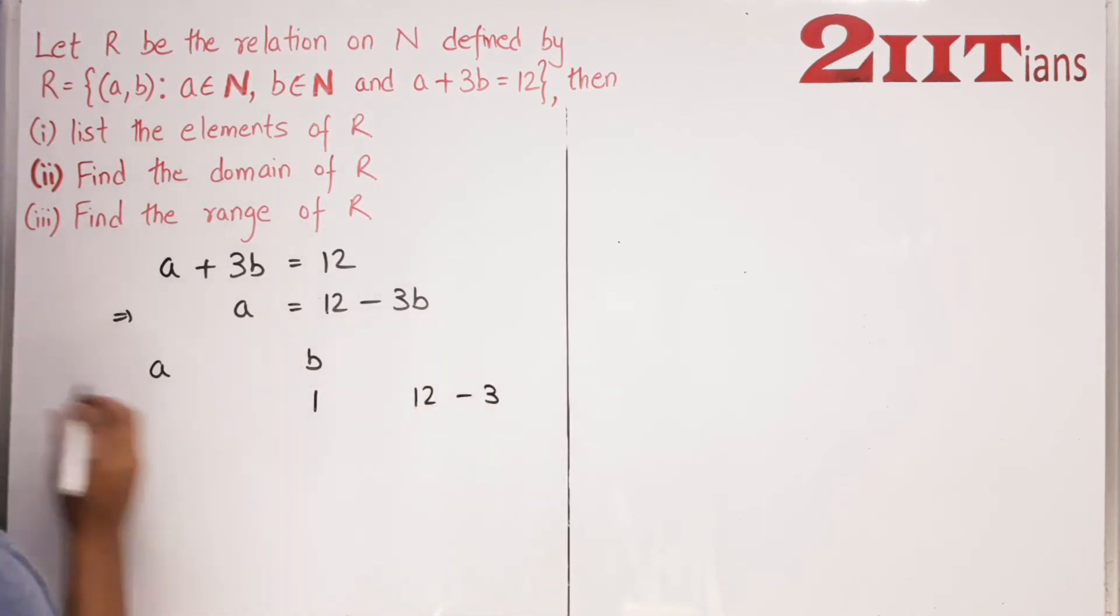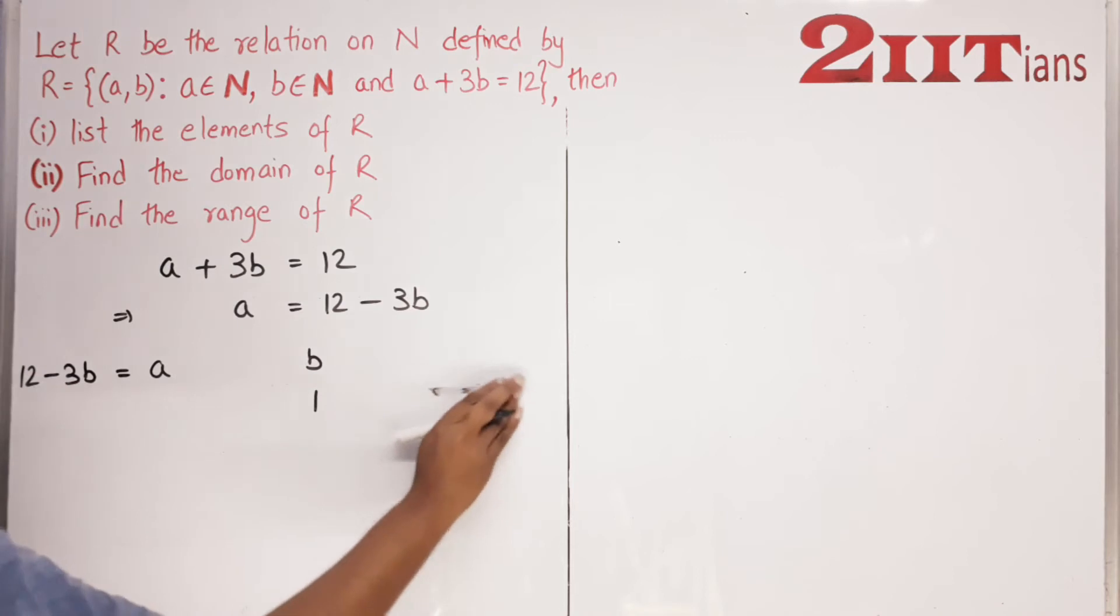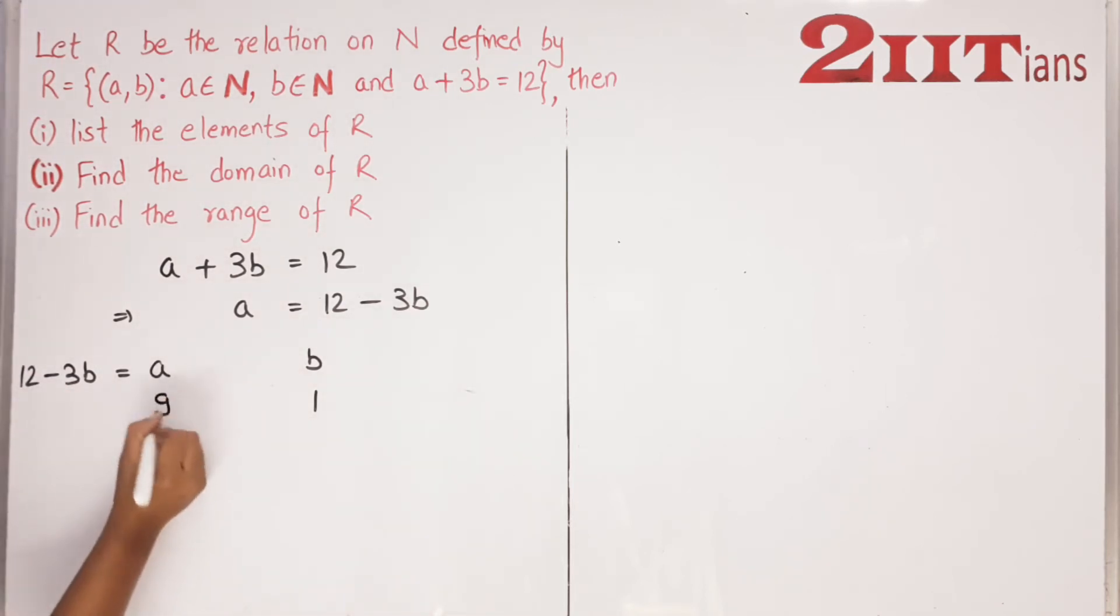When B's value is 1, we get 12-3B. Let me write it here: 3 times 1 is 3, 12 minus 3 gives A=9.